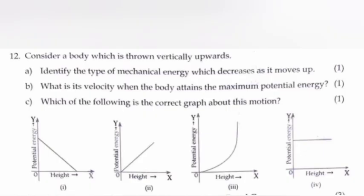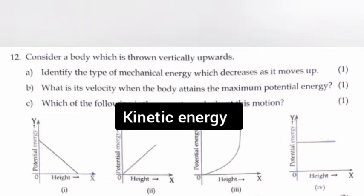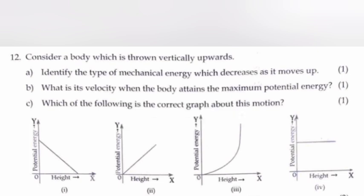Question 12: Consider a body which is thrown vertically upwards. A: Identify the type of mechanical energy which decreases as it moves up. Answer: Kinetic energy. B: What is its velocity when the body attains the maximum potential energy? Answer: 0 meters per second.